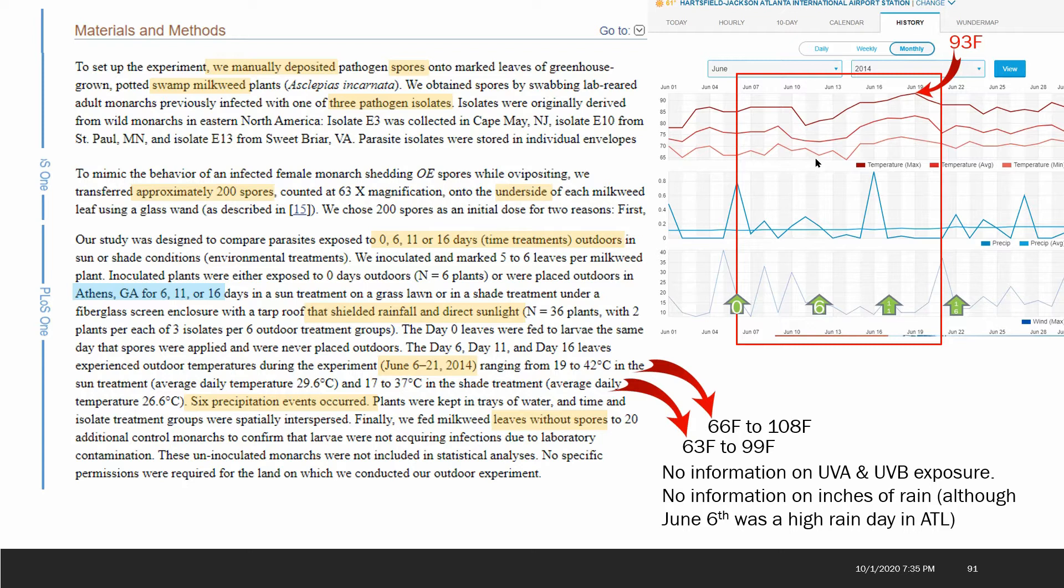The temperature ranges for that time period reached the max around 93 degrees on June 19th and really didn't drop below 65. Since the temperature ranges exceeded this ambient temperature there must have been some local heating effects. There's no information on the amount of UVA versus UVB exposure. UVB would probably not make it to the underside of the leaf, so probably UVA would be the only factor associated with sunlight. And of course there's also no information on how much rainfall, just the six events, although we can see that June 6th was a fairly high rainfall event and June 16th was another fairly high, maybe an inch of rain on the 16th, at least in Atlanta.